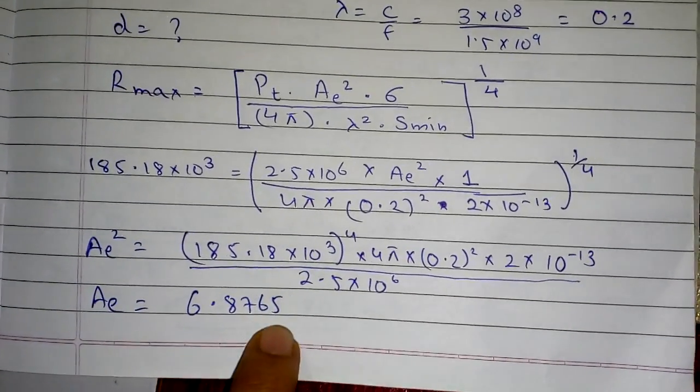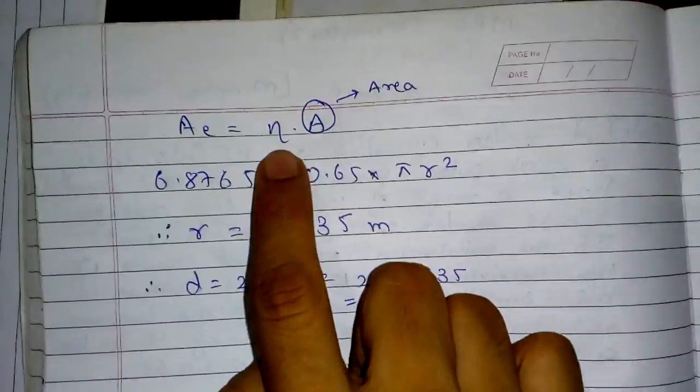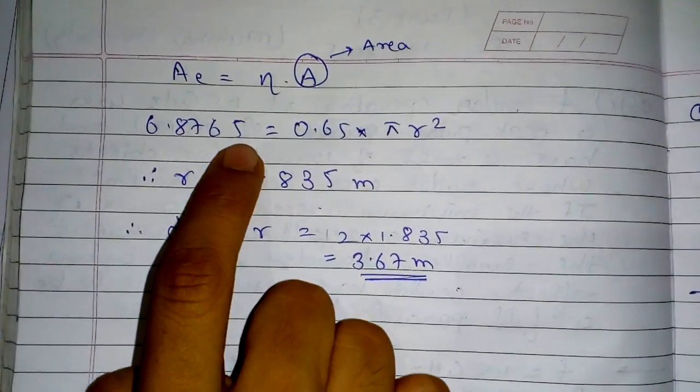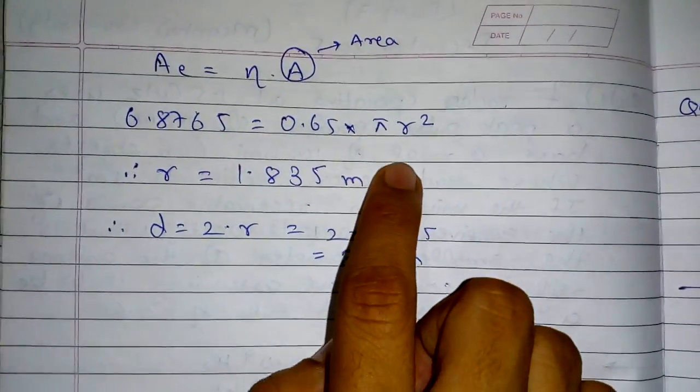Now AE is nothing but η into A. What is this A? It is area. So I have 6.8765 equal to η given in question is 0.65 multiplied by area.